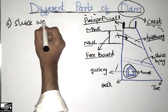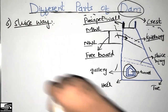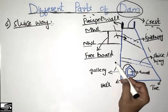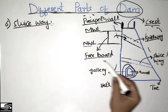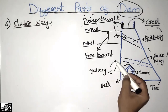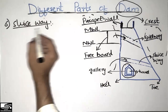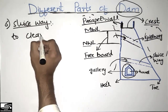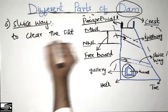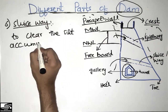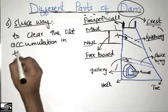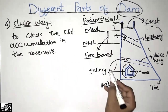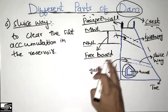The sixth part of the dam is the sluice way. The sluice way is provided near the base of the dam and is used to clear the silt accumulation in the reservoir. If silt accumulates at the base on the upstream face of the dam, it moves through the sluice way to be cleared.